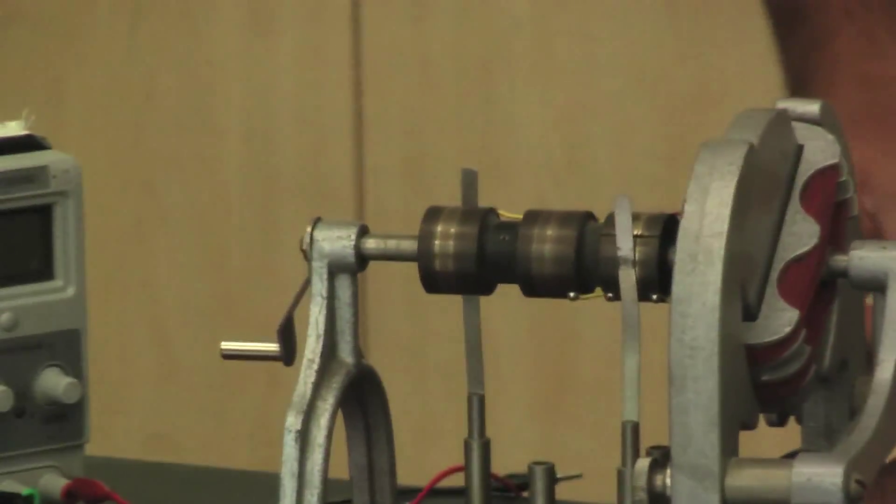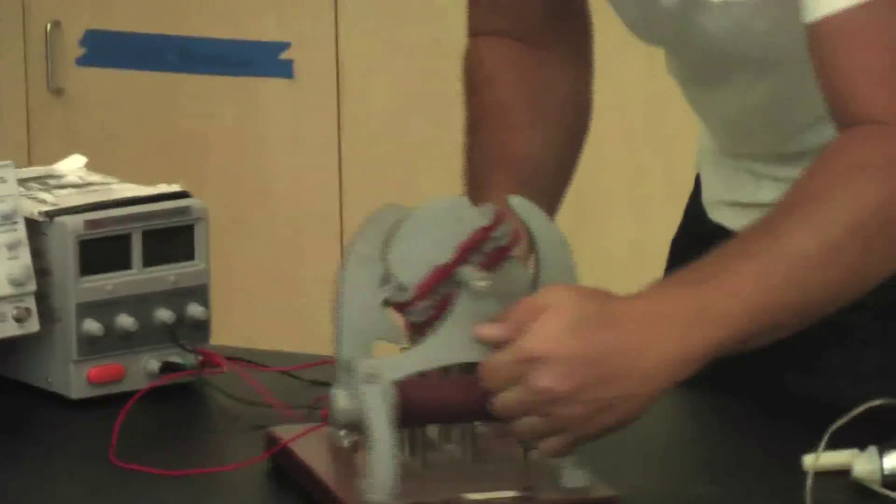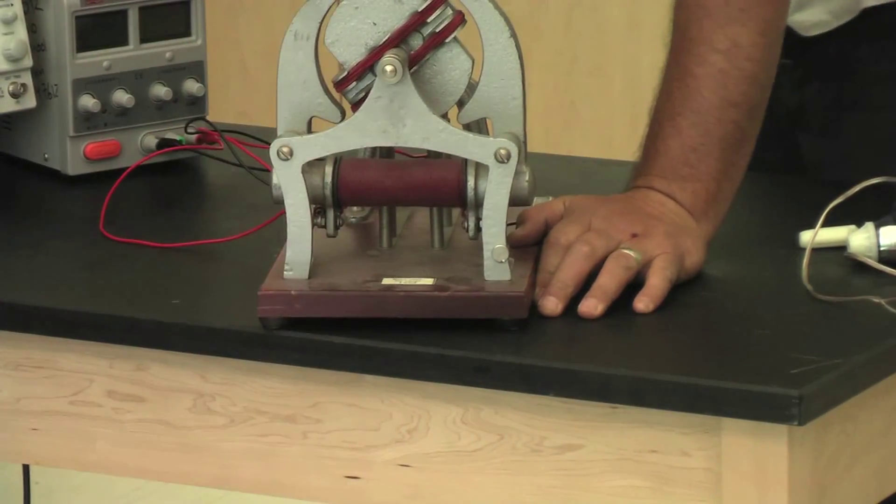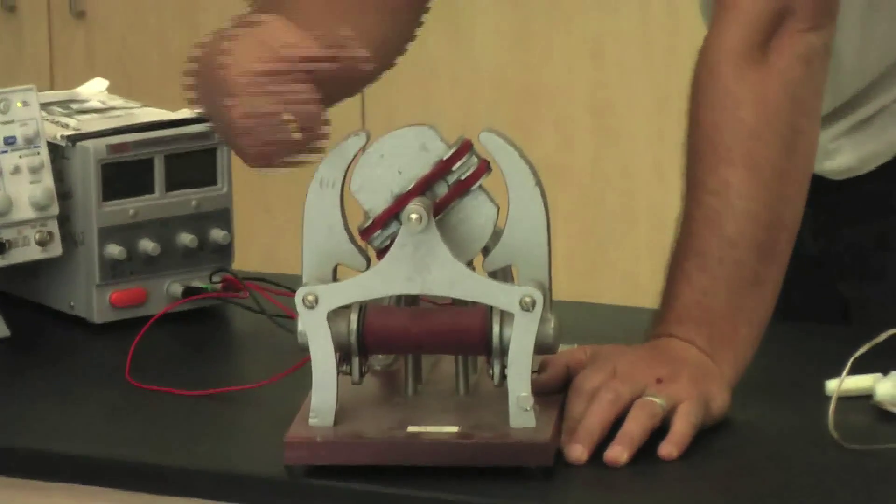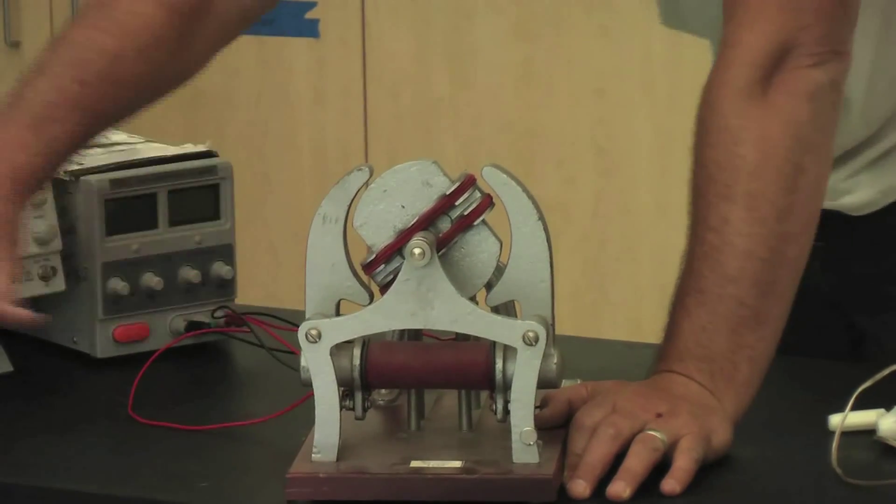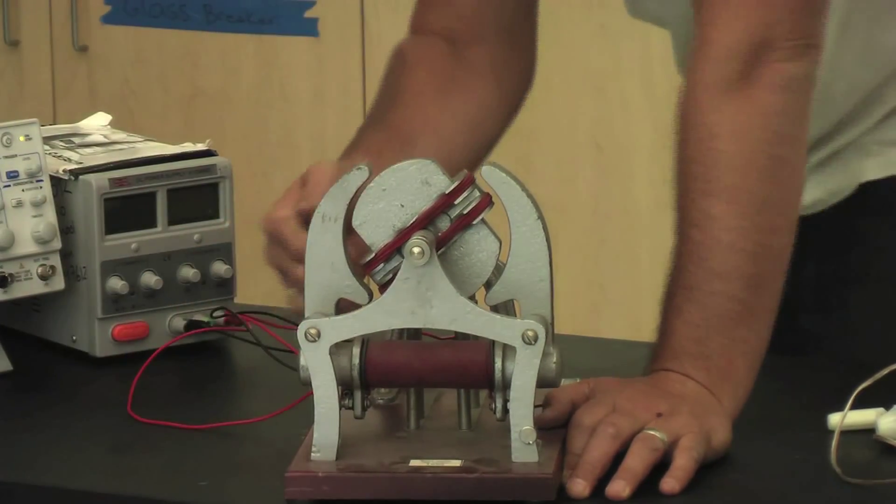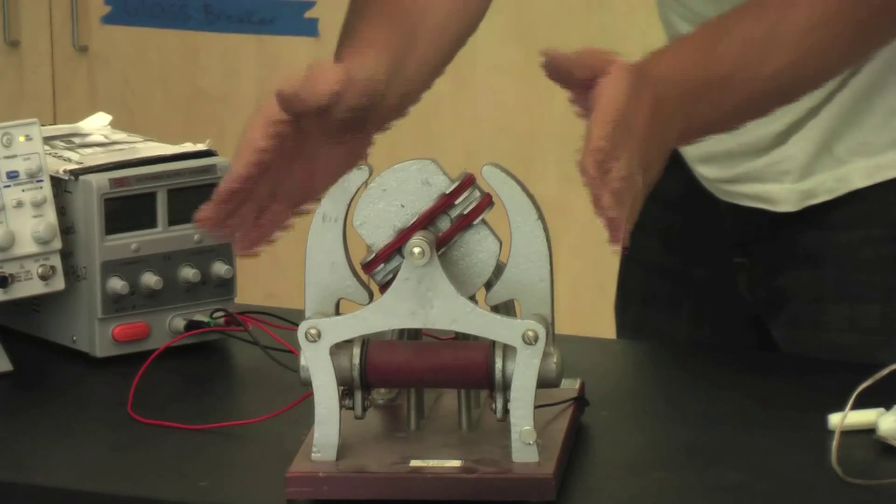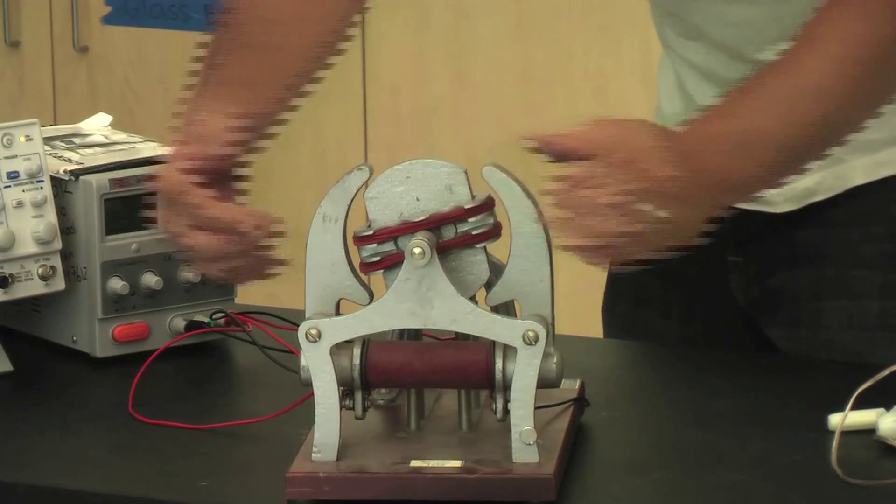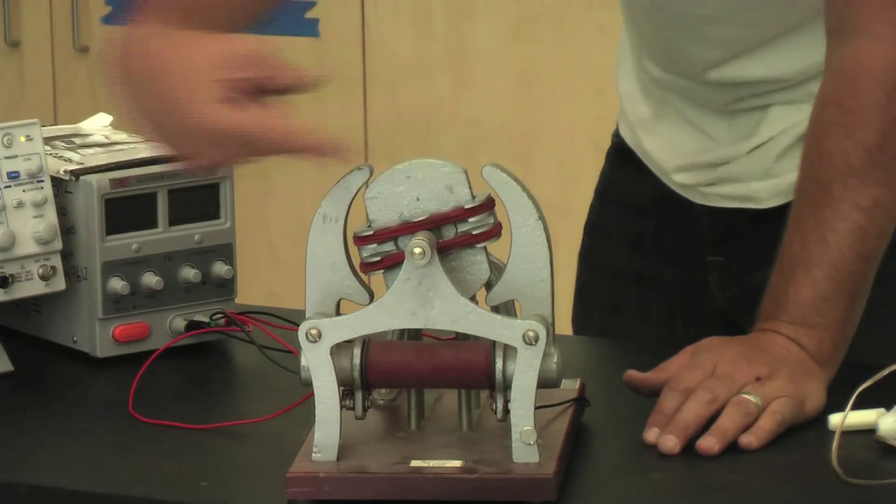And down here, this part right here, that's just electricity coming from this power supply going in a circle, creates a magnetic field, a good old-fashioned solenoid. Those field lines go through the nice iron here, and we get a magnetic field going this way.